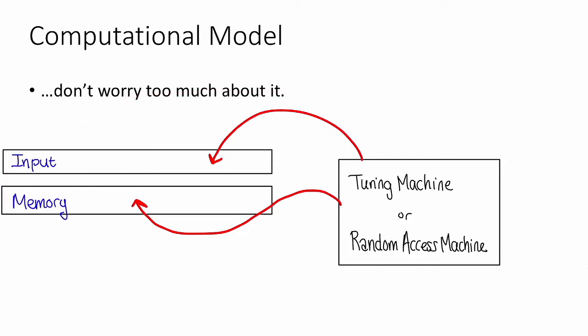As written here, this is a deterministic computational model. There's no randomness. So when we take a computational model like this, and we change it to a computational model for a randomized algorithm, all we're going to do is give this thing access to some random bits. That is, we're going to give it access to some tape that looks like this, that has a bunch of independent uniformly random bits on it.